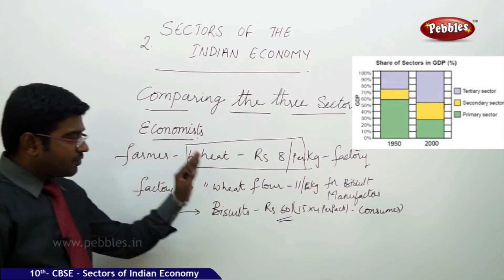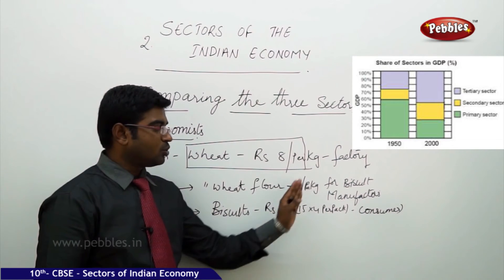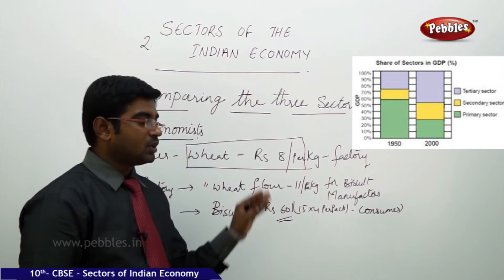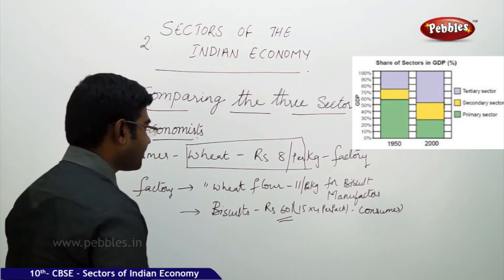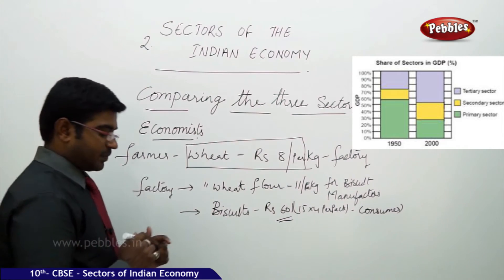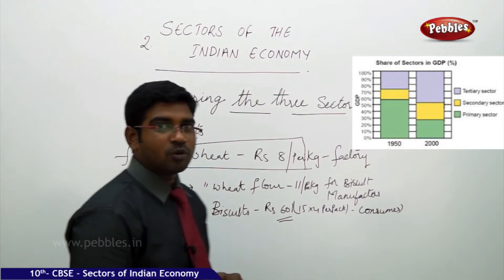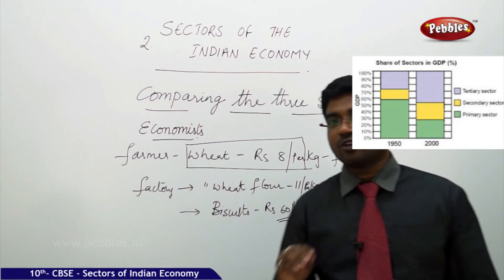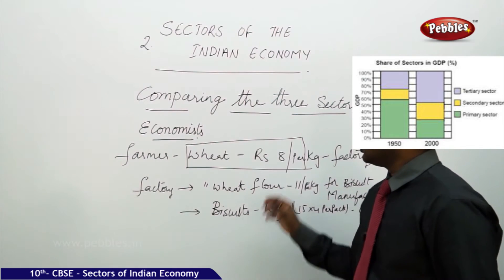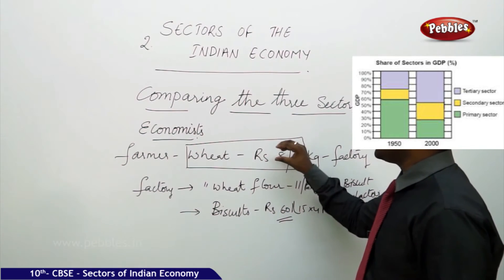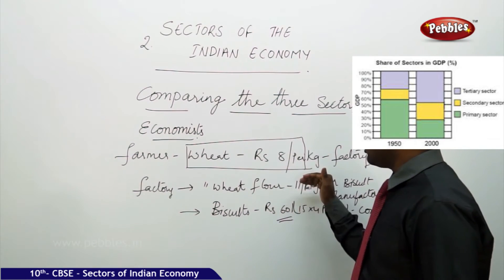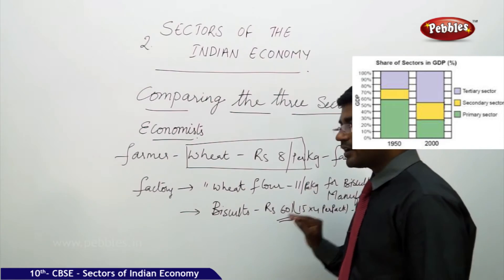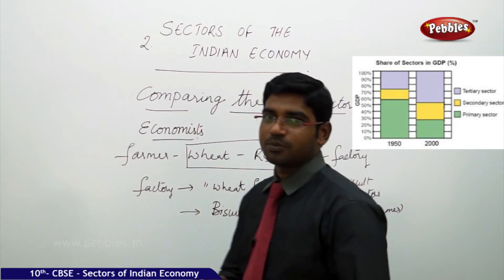Now when we add up, as I told you before, we should not add everything we get in terms of economy. You cannot simply add Rs. 8 and Rs. 11 and Rs. 60. The final product what we are getting is only Rs. 60. There is a small twist here.